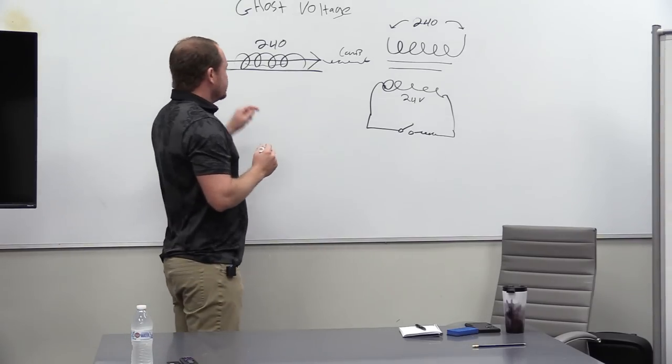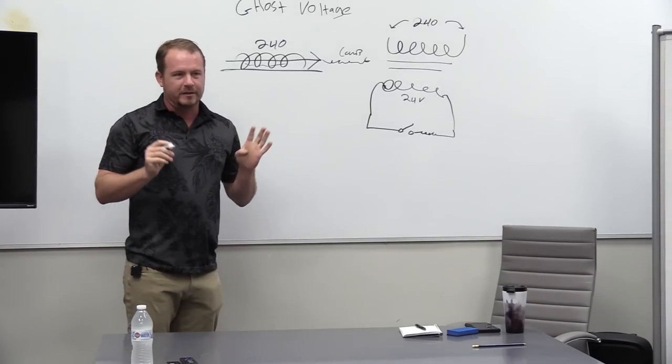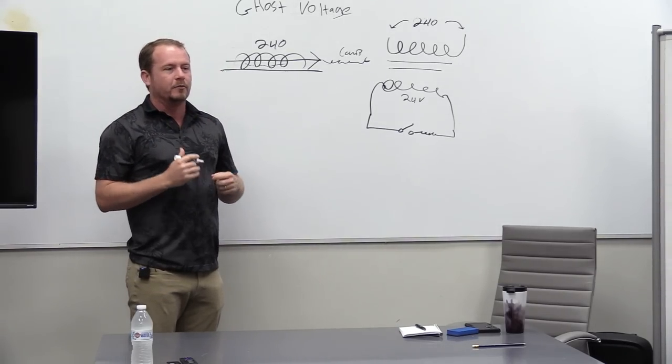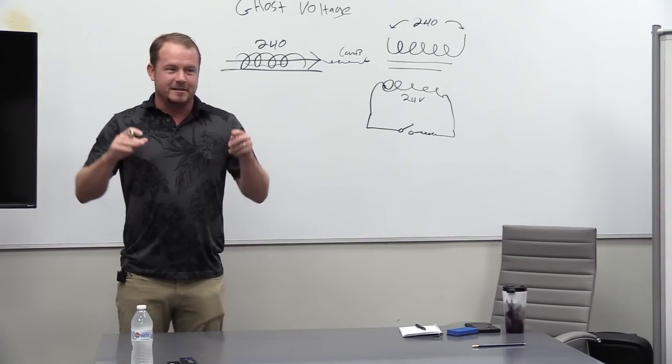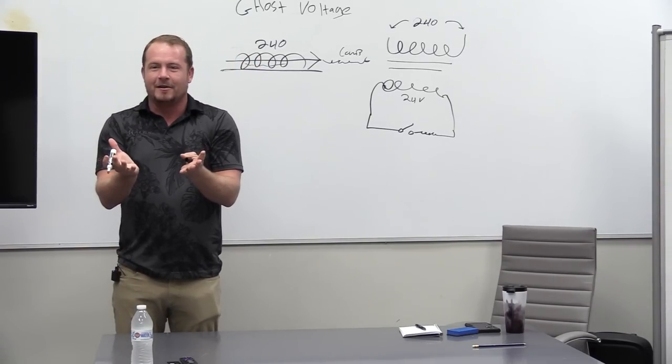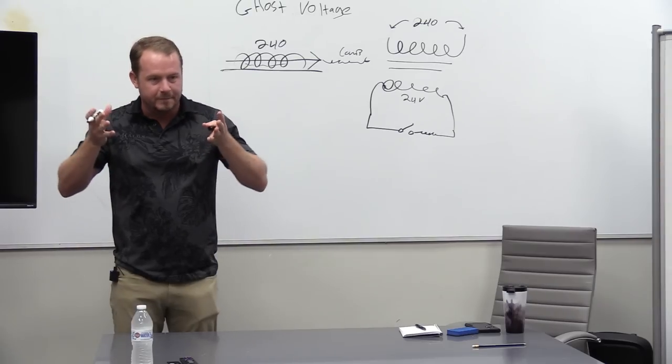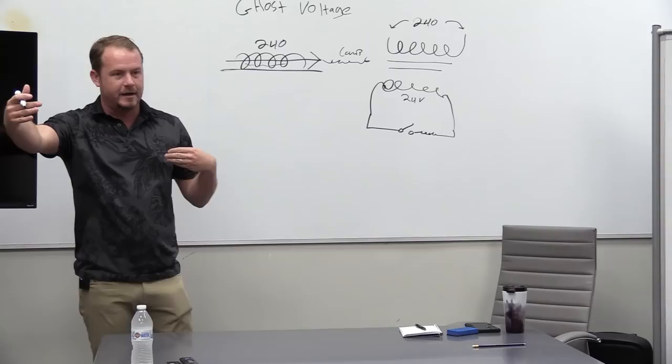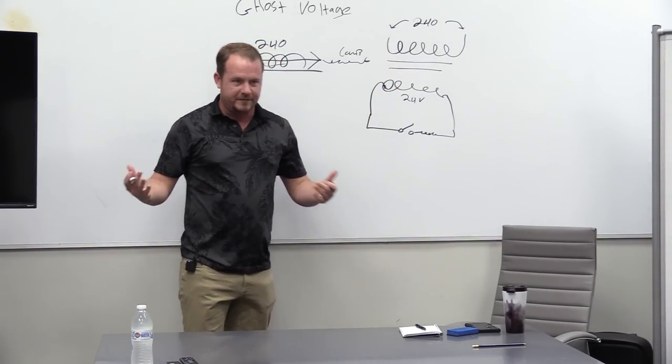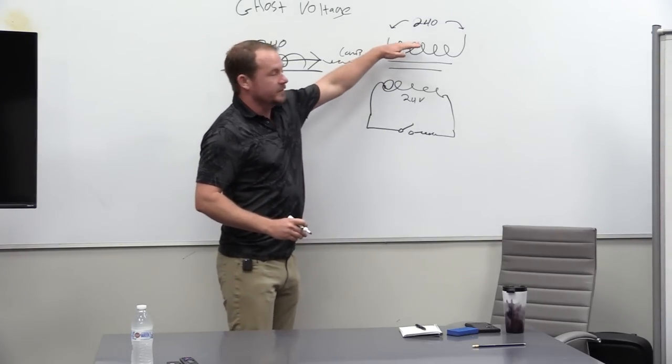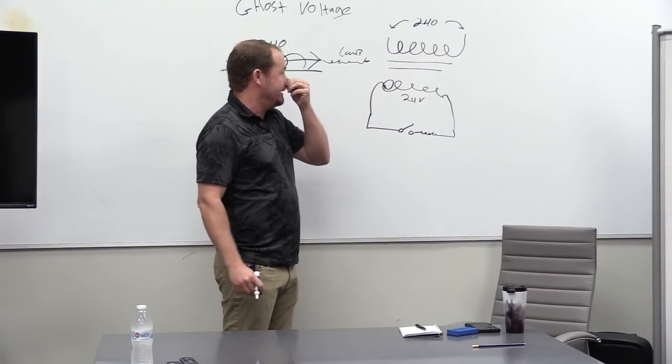Same thing that happens in a transformer, when we go from the primary and we induce a current in the secondary, we can do the same thing by running two wires next to each other. This is why you don't take low voltage wires and run them right next to high voltage wires. This is why, especially with more complicated control systems, you have to be really careful about that. And you have to be careful about grounding and all that stuff, because you'll get these induced voltages that mess with the controls.